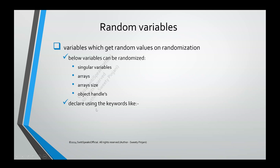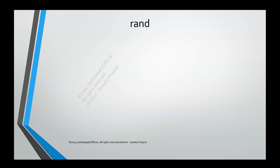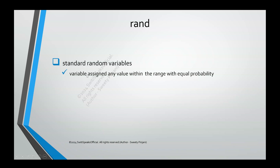To randomize these variables, you need to declare them using the keywords RAND or RANDC. The first keyword is RAND, which stands for randomized. Whatever you declare with RAND — say I declare RAND data — it means that data variable needs to be randomized. Variables declared with RAND can be assigned any value within the range with equal probability.